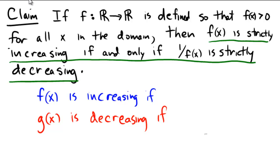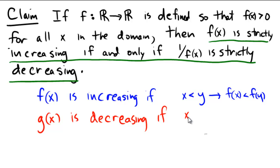Just to remind ourselves, f of x is going to be increasing if x less than y implies that f of x is less than f of y. What we're saying is that along the x-axis, if we have a second value that's larger than a first value, then f of that second value better be larger than the first value also. For decreasing, if x is less than y, we would have that f of x is actually bigger than f of y — so if x is further to the left than y, the output from f of x will be larger than f of y, and the function will be decreasing.